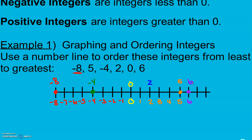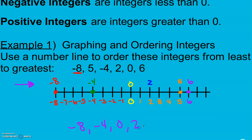And there we go. To order these from least to greatest, we look at the number line. We have: negative 8, negative 4, 0, 2, 5, and 6.